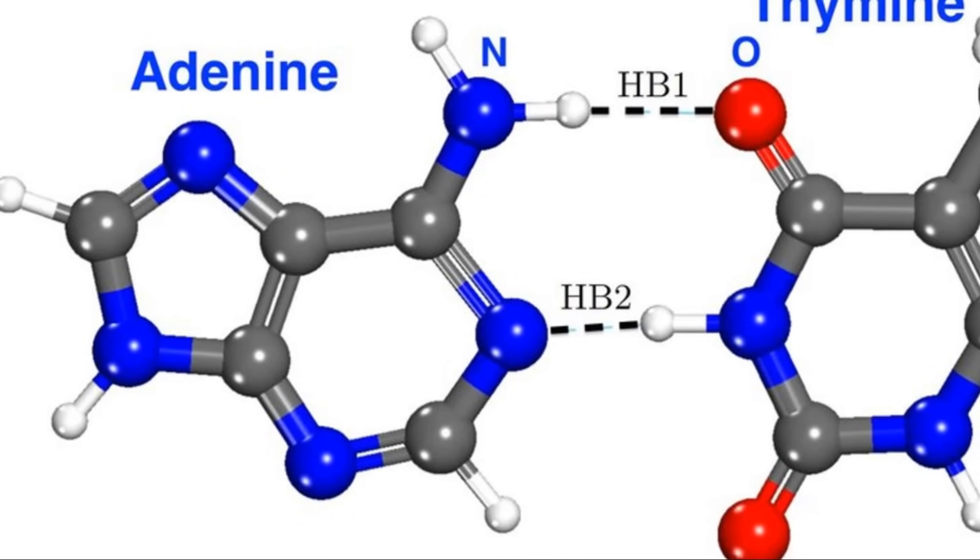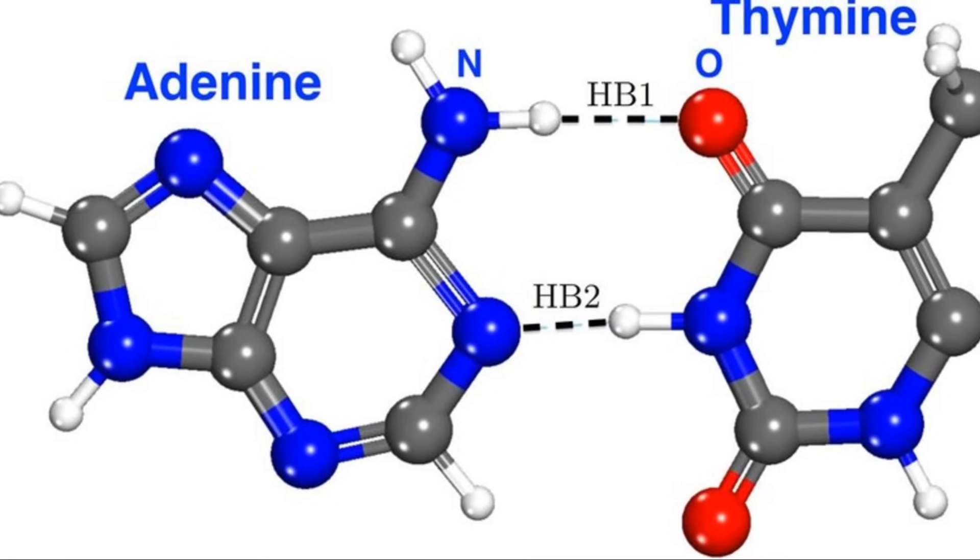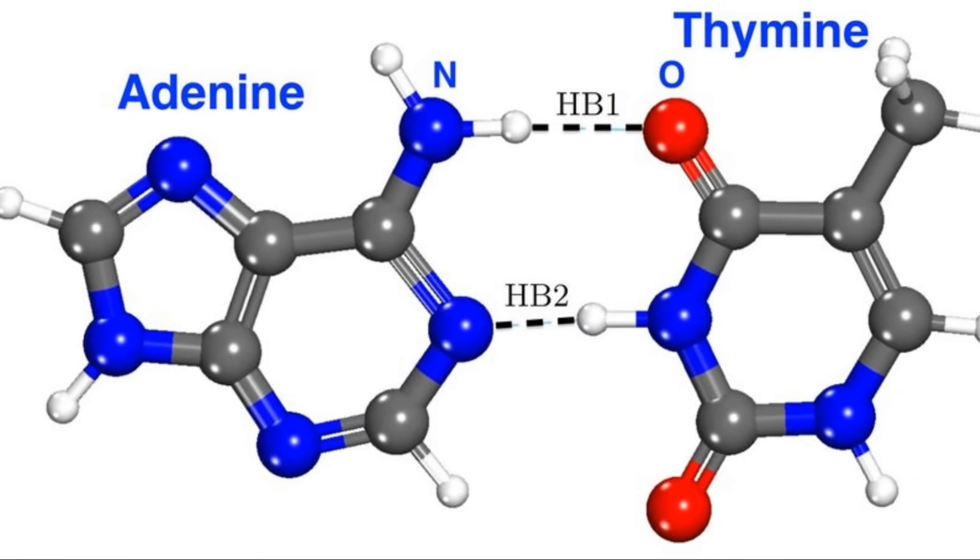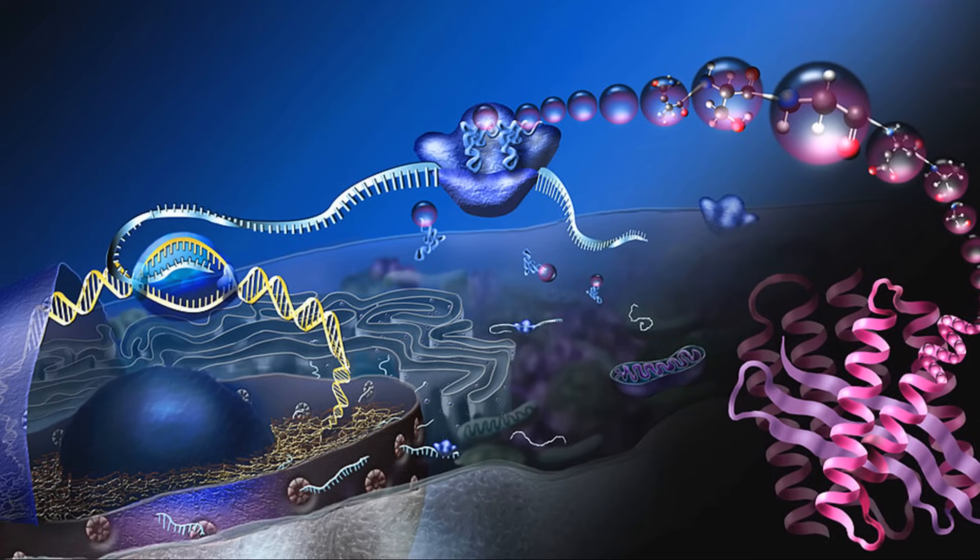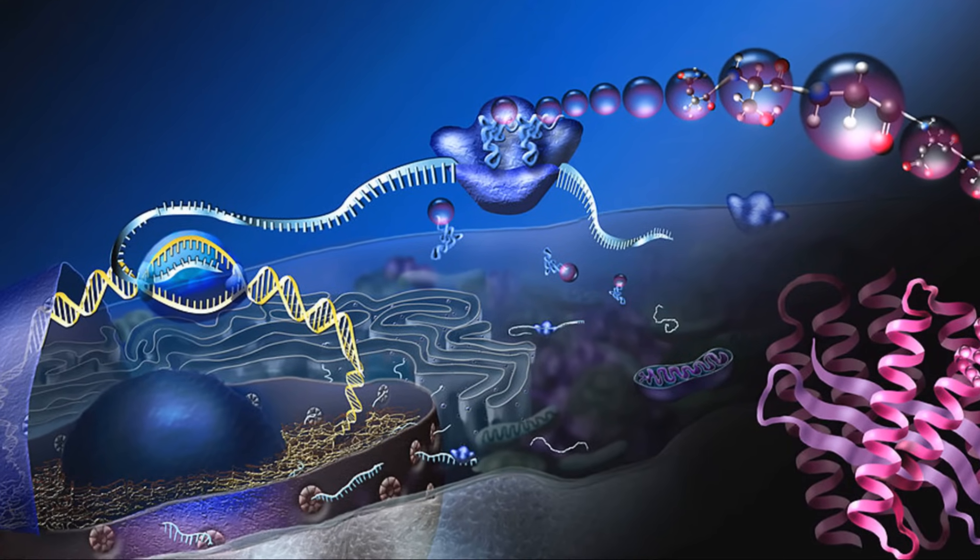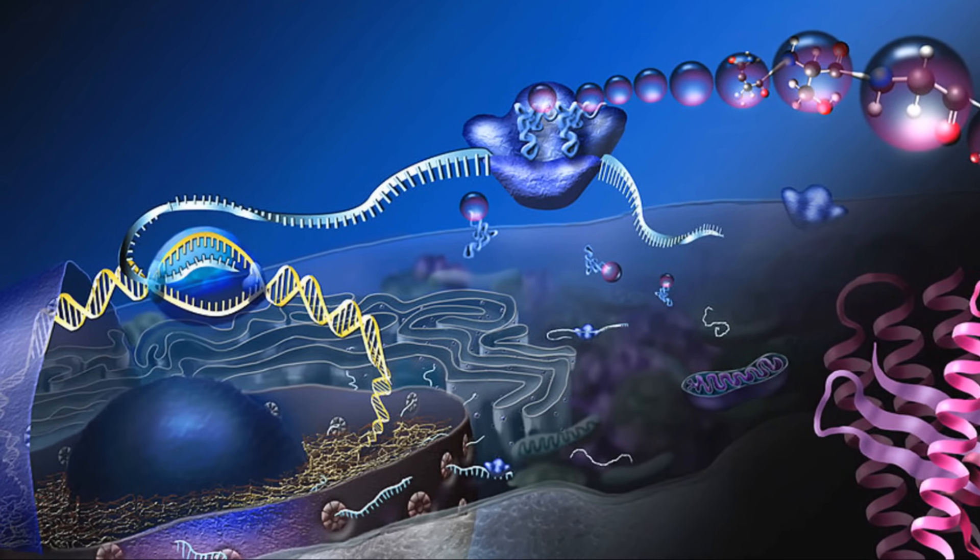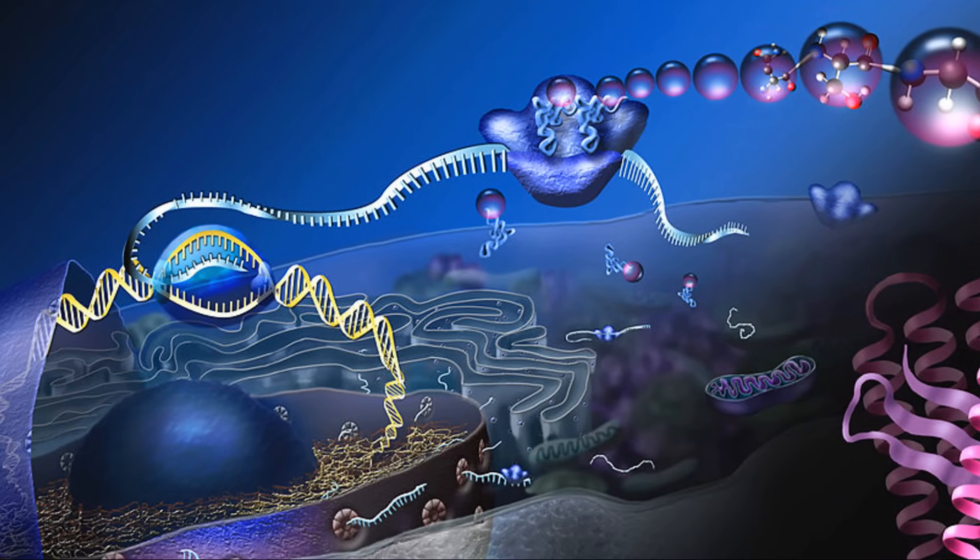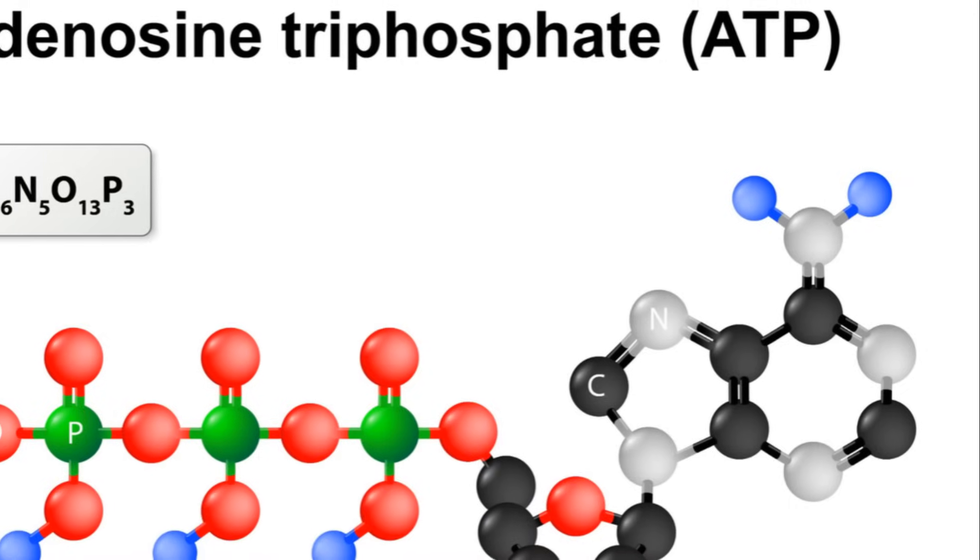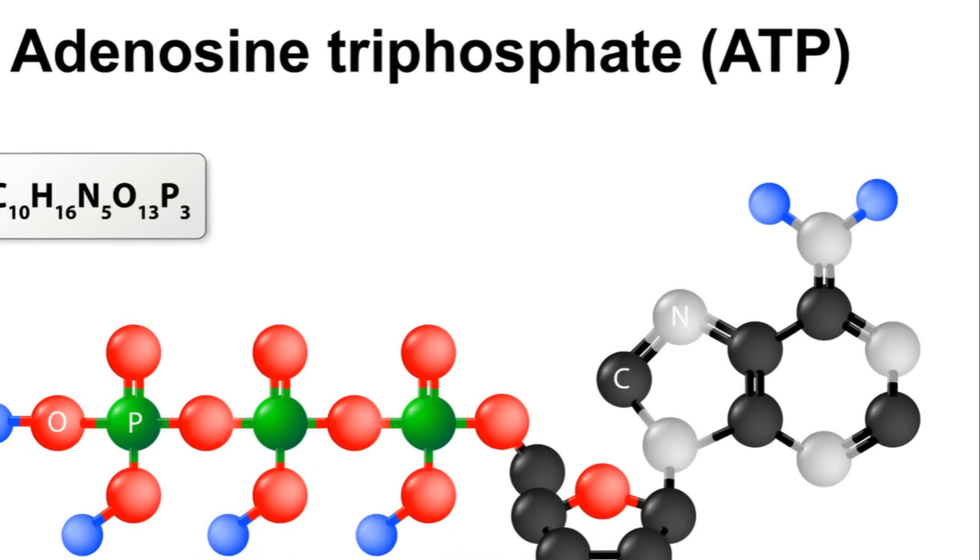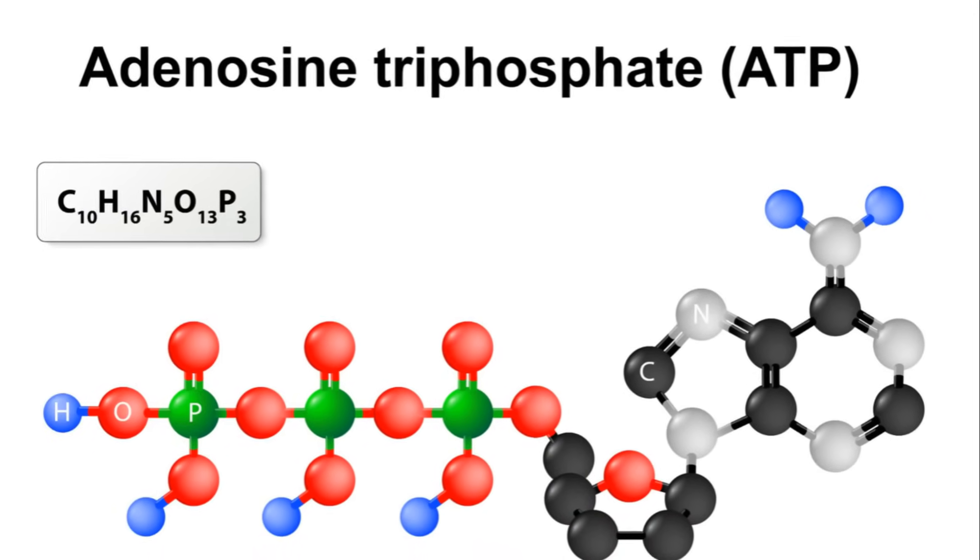Adenine or A is a purine nucleotide, pairing with thymine in DNA and uracil in RNA. This particular nucleotide supports protein synthesis, a process integral to the growth and repair of cells. In addition to its role in genetic coding, adenine is also a component of molecules such as ATP, adenosine triphosphate, which serves as a critical energy carrier in cells.